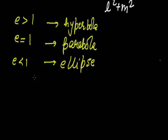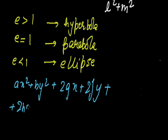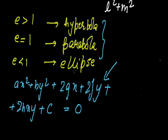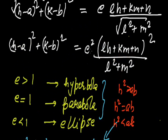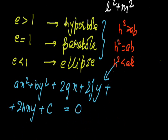One more important thing — the general equation of a conic is ax squared plus by squared plus 2gx plus 2fy plus 2hxy plus c equals 0. If you want to see the eccentricity conditions in this form, then on solving: if h squared is greater than ab we get a hyperbola; h squared equals ab gives a parabola; and h squared less than ab gives an ellipse. Note that this h and ab are different from the h and ab used earlier in the point coordinates.